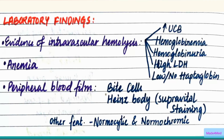In the laboratory findings, there is evidence of intravascular hemolysis, which mainly occurs in acute hemolytic anemia: increased unconjugated bilirubin, hemoglobinemia, hemoglobinuria, high LDH, and low or absent haptoglobin. There will also be anemia due to hemolysis. In the peripheral blood film you can find bite cells, where part of the RBC is bitten off by macrophages, and Heinz bodies on supravital staining, which are denatured precipitates of hemoglobin.